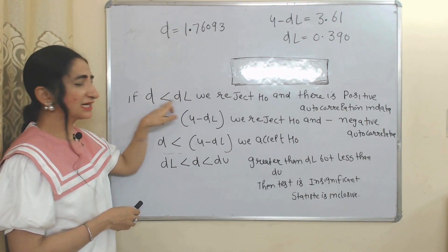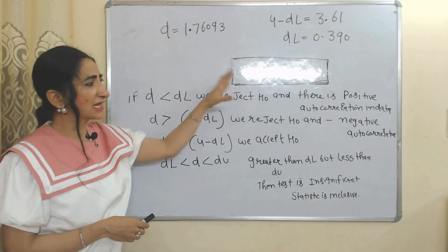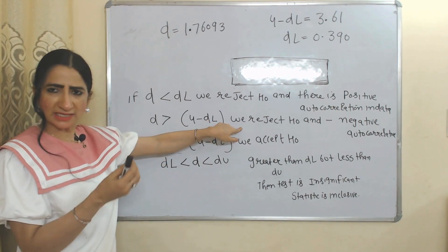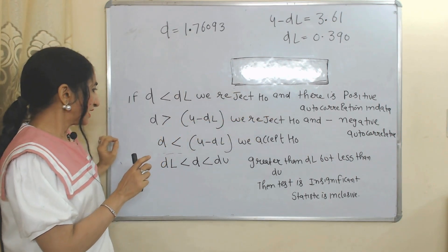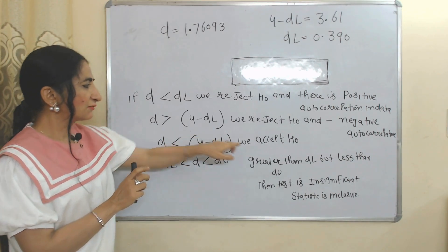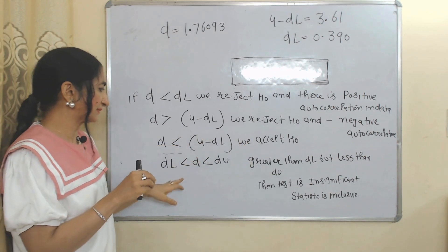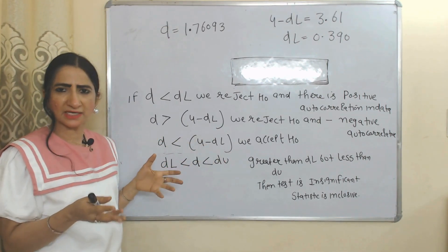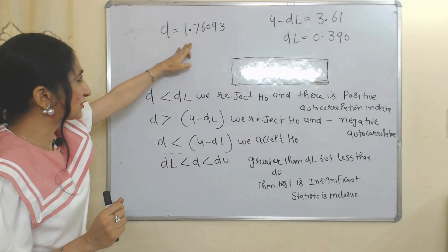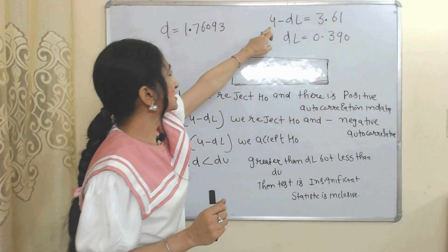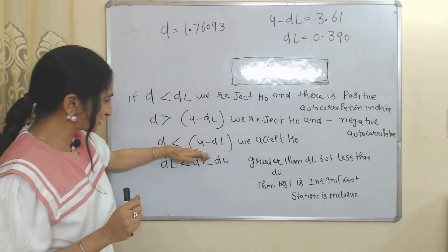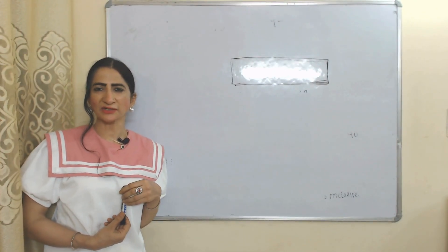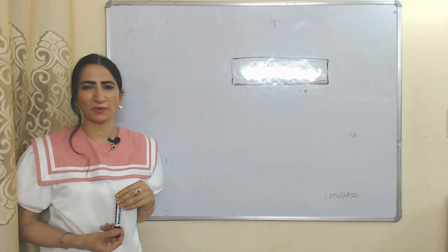If d_L is greater than d, we reject the null hypothesis and conclude there is negative autocorrelation. If d is greater than 4 minus d_L, we also reject the null hypothesis and conclude negative autocorrelation. If 4 minus d_L is greater than d, we accept the null hypothesis. If d is greater than d_L but less than d_U, the test is inconclusive. Here, 4 minus d_L is greater than d, so we accept the null hypothesis. This is all about the Durbin-Watson test to detect autocorrelation.